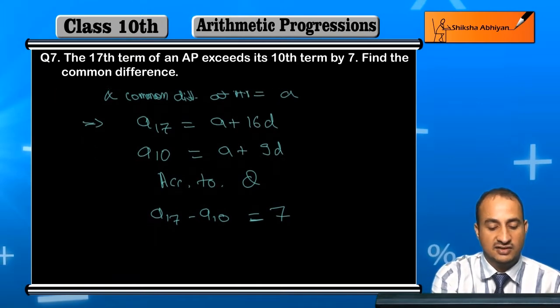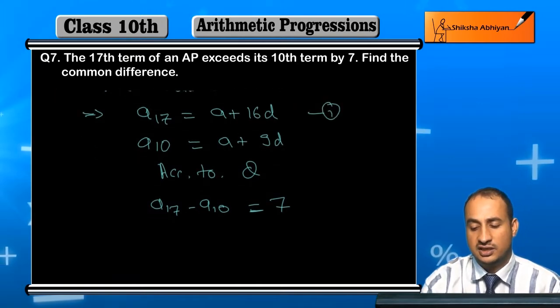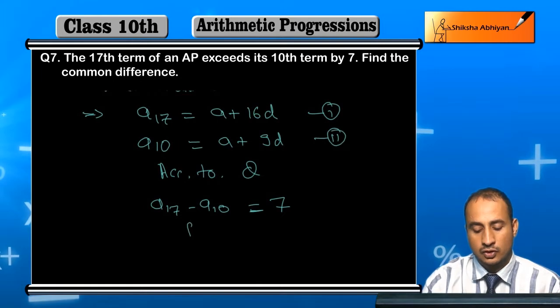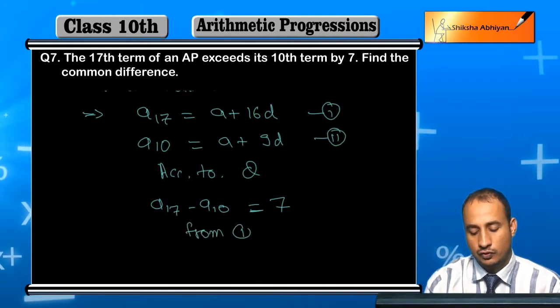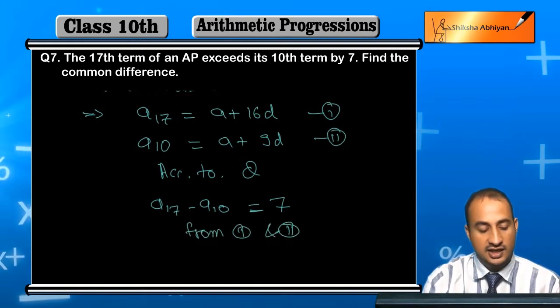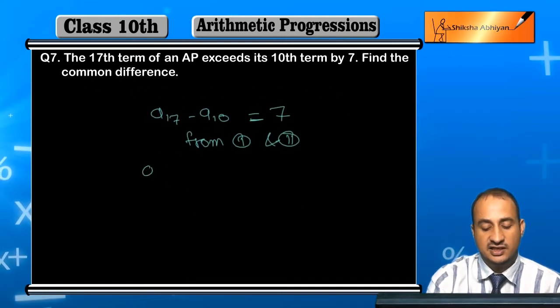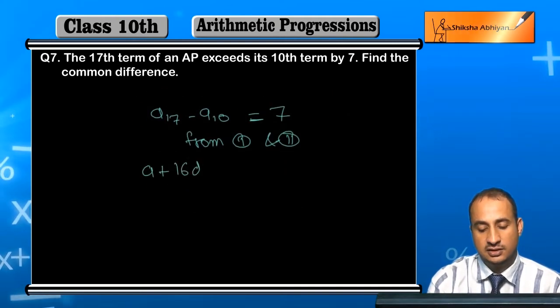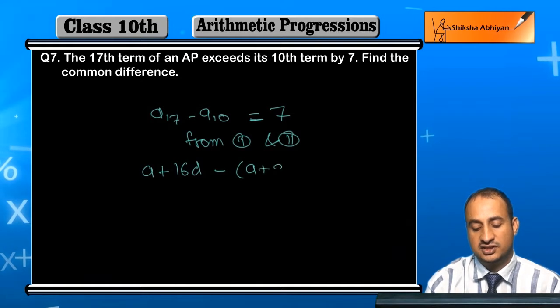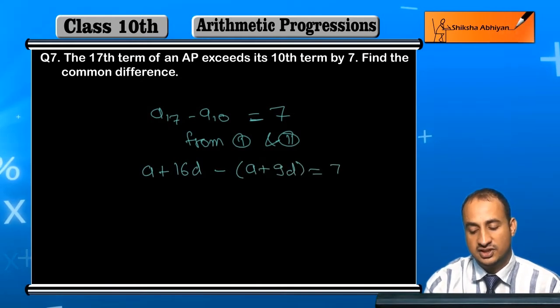So here we can write the value of A17. Let's take this as first and this as second. From 1 and 2, A17 is A plus 16D, minus A10 which is A plus 9D equals 7.